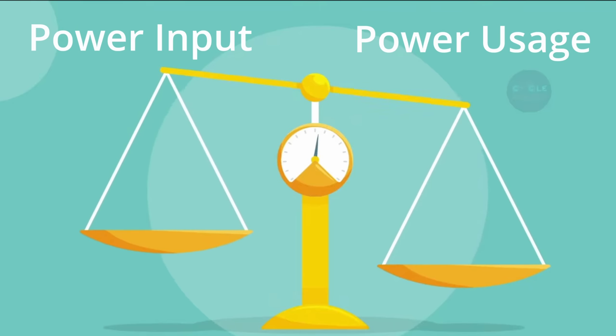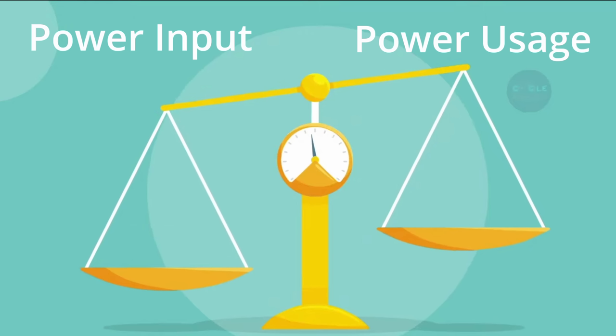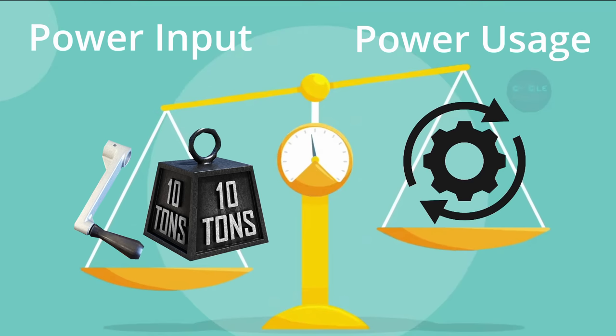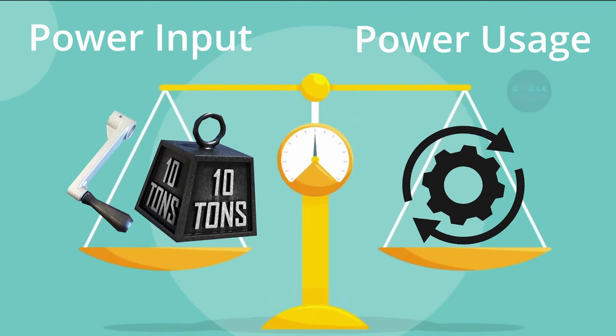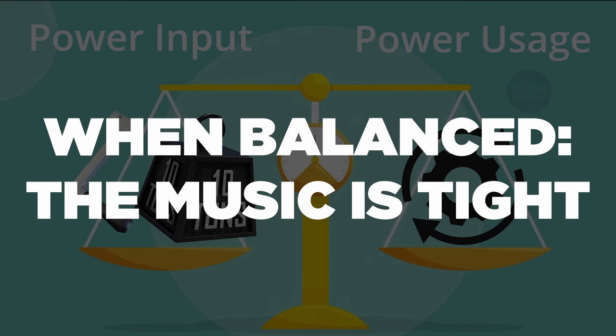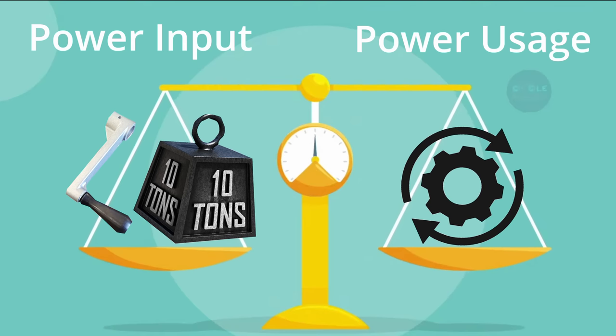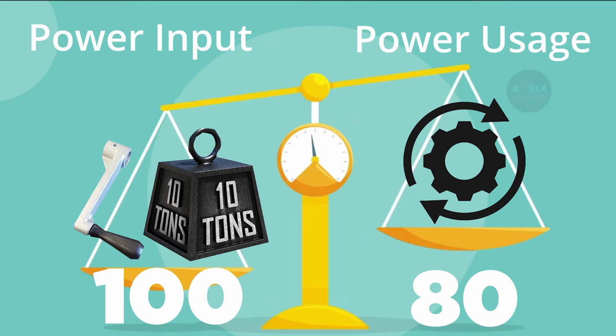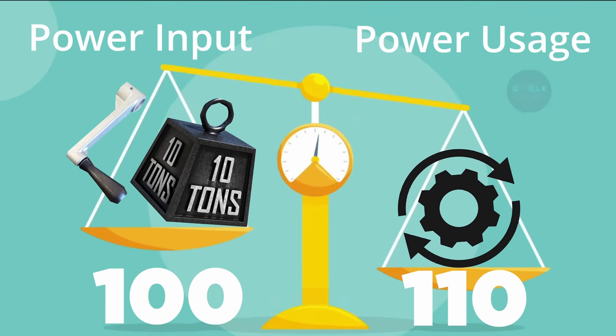And to visualize the problem I'm trying to solve here, let's look at the Marble Machine 3 as a balance scale. So on the left side of the scale we have the power input and on the right side of the scale we have the power usage which is all the friction in the system. So what I'm trying to do is to make a system where we can balance the two sides out. Because when we can balance the two sides the music is tight. If the power input is a random number, let's say 100, but the power usage is only 80, we have 20 points of power more than we need and the machine will accelerate. And vice versa, if the power usage suddenly increases, the speed will decrease.